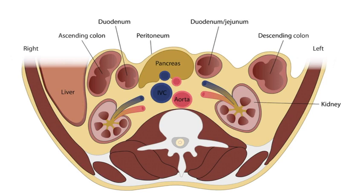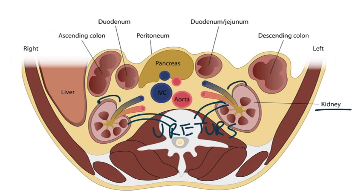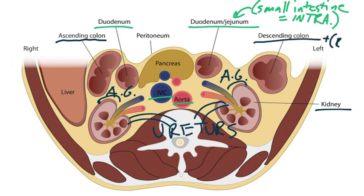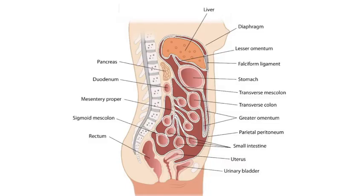This image shows an axial cut of the retroperitoneal structures. We can see the kidneys, and of course the ureters descend from the kidneys, so those are retroperitoneal. The adrenal glands sit on top of the kidneys, so they are retroperitoneal as well. The IVC and aorta are retroperitoneal. We also have the duodenum visible on this cut. For the most part, think of the small intestine — excluding the duodenum — as being intraperitoneal. And then we have the ascending and descending colon. The rectum, not shown here, is also retroperitoneal, as seen on the sagittal cut.